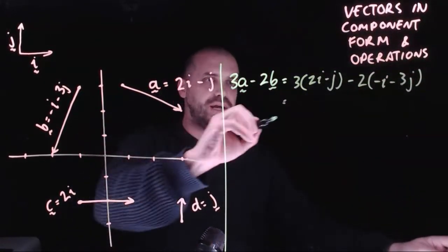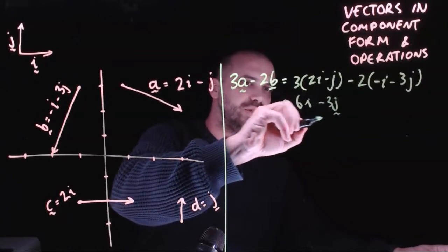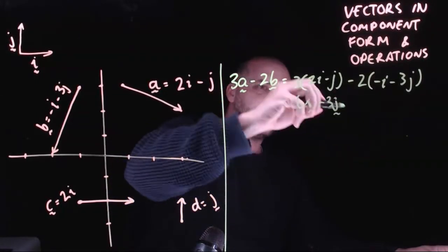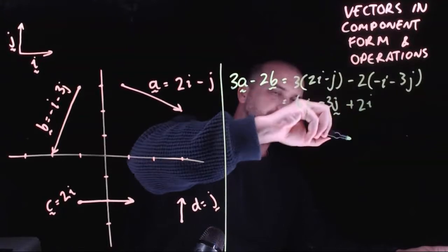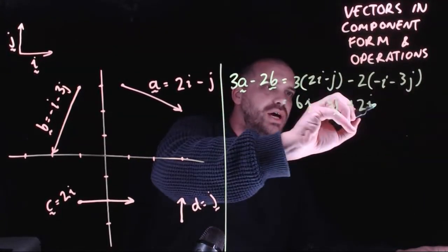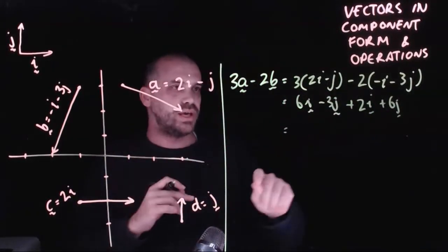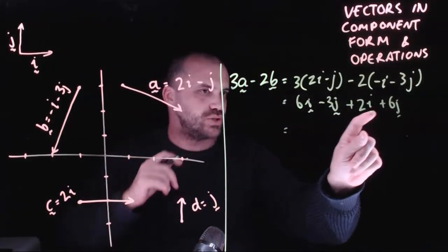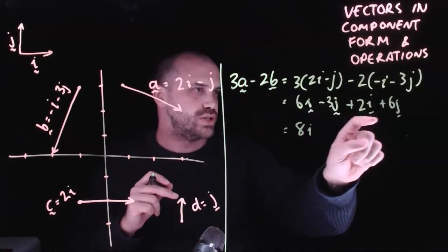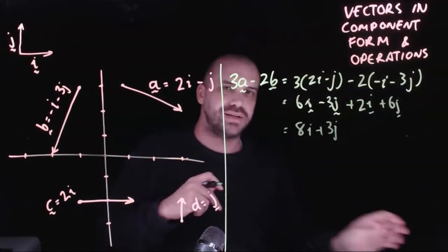We expand all the brackets here. So we'll get 6i minus 3j. And then minus two times minus i is positive 2i. And minus two times minus 3j is positive 6j. And what do we get? We get 6i plus 2i is 8i. And we get negative 3j plus 6j, which is positive 3j.